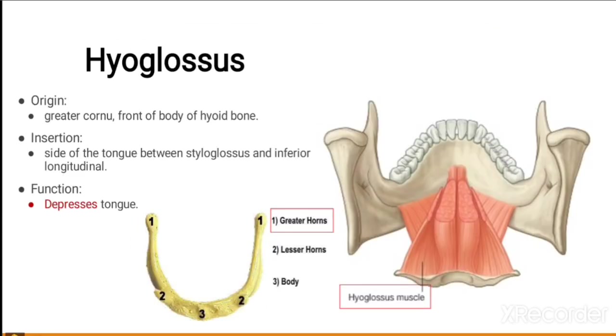Hyoglossus arises from the greater cornu and front of the body of the hyoid bone, and inserts on the side of the tongue between the styloglossus and inferior longitudinal muscles. Its function is to depress the tongue.